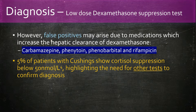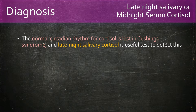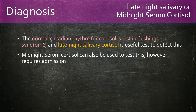An important point is that about 5% of patients with Cushing's syndrome show cortisol suppression below 50 nmol/L, highlighting the need for other tests to make a confirmatory diagnosis. The normal circadian rhythm for cortisol is lost in Cushing's syndrome, and the late-night salivary cortisol test is useful to detect this. It does not require admission unlike the midnight serum cortisol test, so it is generally preferred. A value of 50 nmol/L points away from Cushing's syndrome.